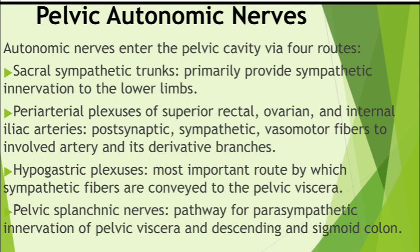The peri-arterial plexuses are found around the ovarian artery, the superior rectal artery, and the internal iliac arteries. They represent minor routes by which sympathetic fibers enter the pelvis and are primarily concerned with vasomotion of the arteries they accompany.